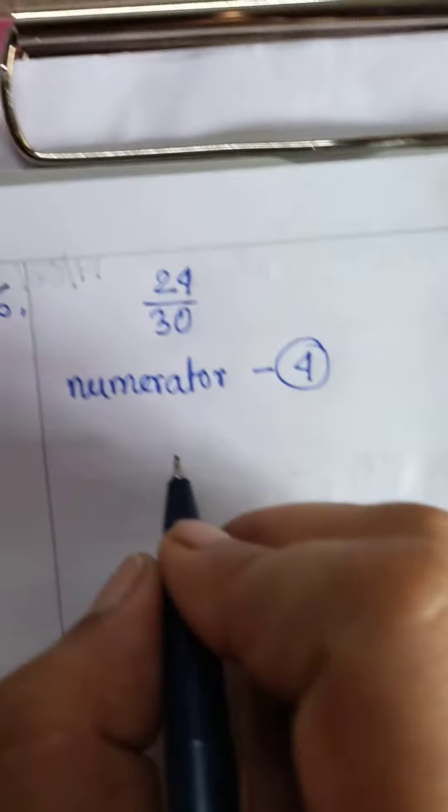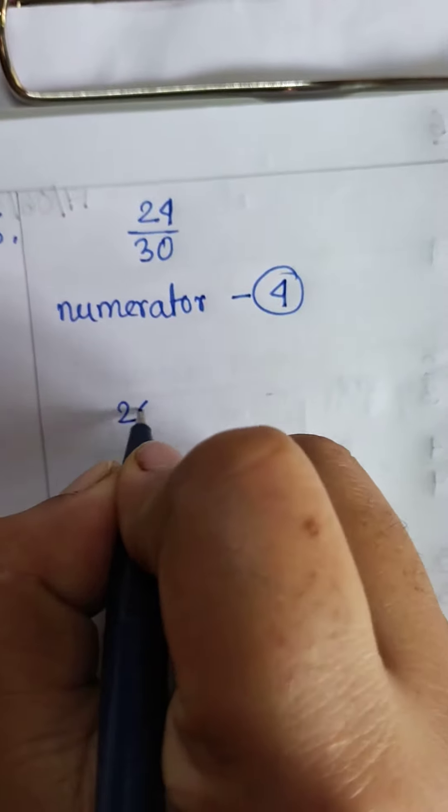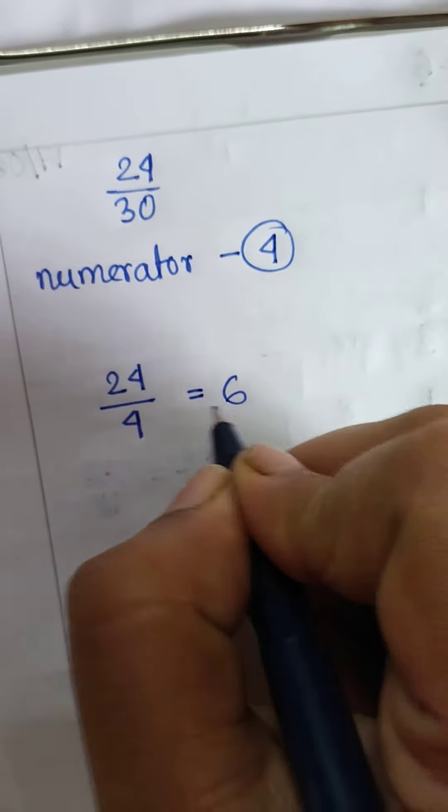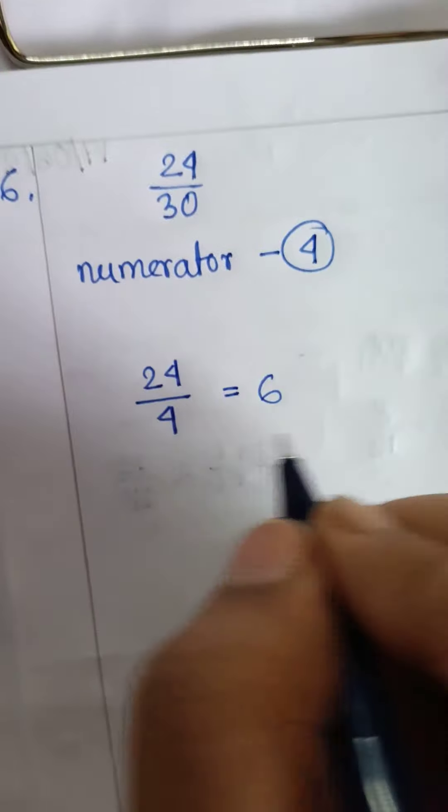First we have to divide 24 by 4. 6 times 4 is 24.